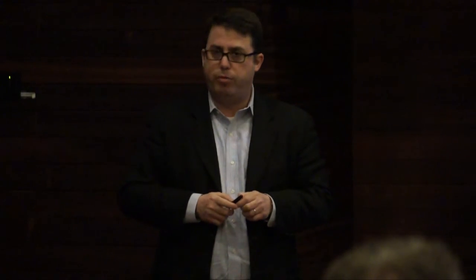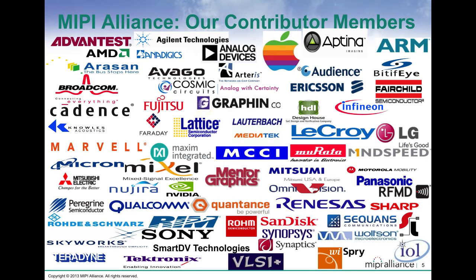This is the list of contributor members. We have the board, contributor members, promoter members, and then adopters. The contributor level members are really the members who are actively participating in the development of the interface specifications. The adopter level — and we have 240 plus members, continuing to grow every year — are really implementers who receive the specs as they're published. We do get comments from time to time. You'll see some of the names up there — the Apple logo, Nvidia, and a number of other companies. You can look at our website for the full member list.